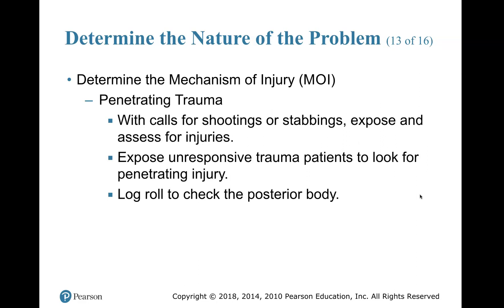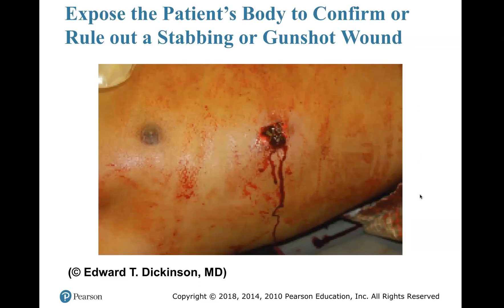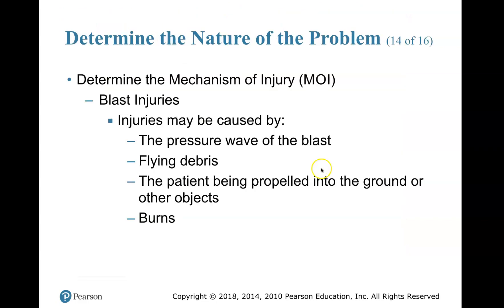For penetrating trauma from shootings or stabbings, expose and assess for injuries. Expose unresponsive trauma patients to look for penetrating injuries, and log roll to check the posterior body for exit wounds. For a lateral chest wound, apply an occlusive dressing — taped down on three sides only, leaving one side open to allow drainage and prevent tension buildup. Blast injuries may be caused by the pressure wave, flying debris, the patient being propelled into objects, or burns.